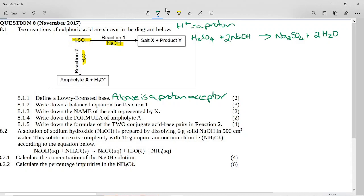Now it says, write down the name of the salt represented by X. That is sodium sulfate. And you can write it with the F or with the PH. According to IUPAC naming, you should actually write it with the F, but they will accept with a S-U-L-P-H-A-T-E.